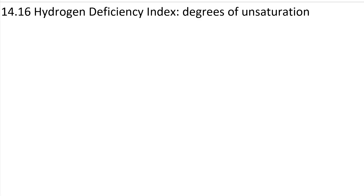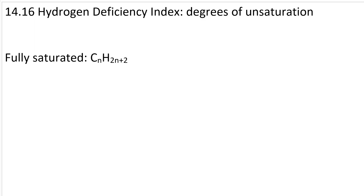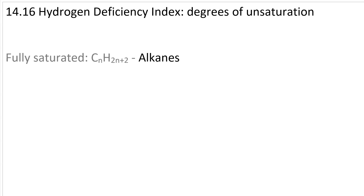Hydrogen Deficiency Index and Degrees of Unsaturation. To be fully saturated means to contain the maximum number of hydrogens. So if you have n number of carbons, then your number of hydrogen atoms is 2n plus 2. This ratio of carbons to hydrogens corresponds to alkanes with no heteroatoms.